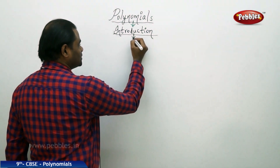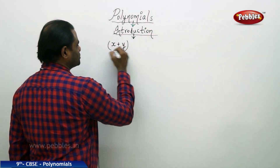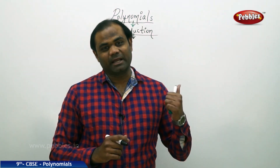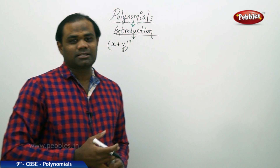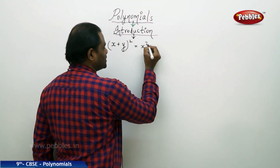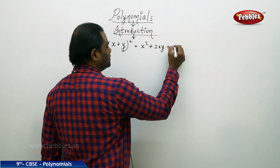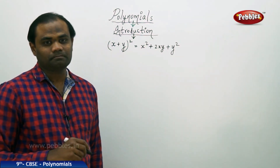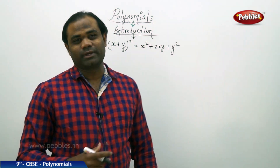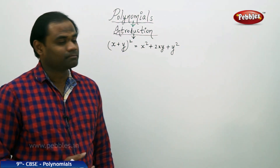One of the most famous formulae learnt in the lower classes is (a + b)² or (x + y)². Let's see how we can expand this. We all know that (a + b)² equals a² plus 2ab plus b², which means (x + y)² is derived to be x² + 2xy + y². We all know this formula because it is applied in many concepts in lower classes.